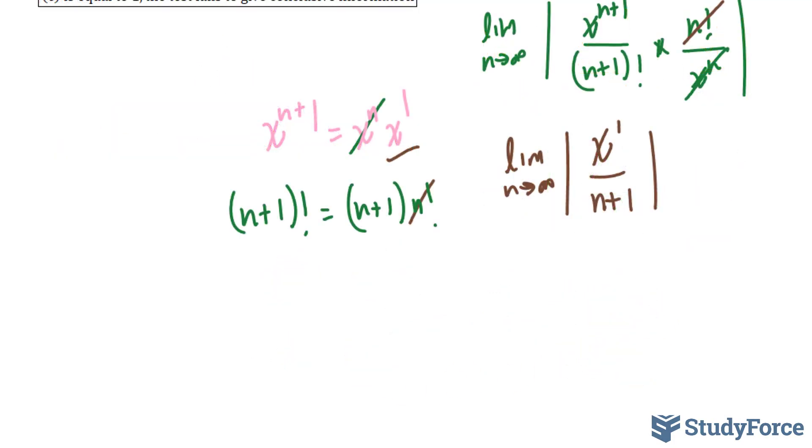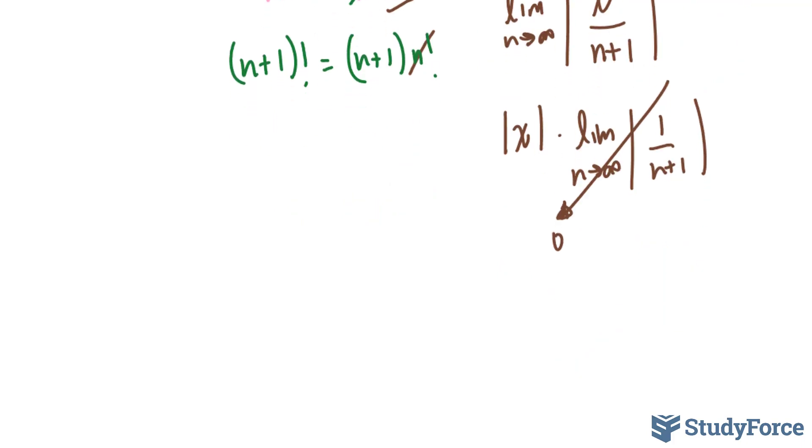Now since we're taking the limit for n, we can separate this as a product. We have absolute of x times the limit as n approaches infinity for 1 over n plus 1. And substituting a very large number into the denominator here will give us eventually 0. So all of this goes to 0. 0 times the absolute of x is equal to 0.